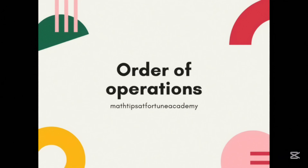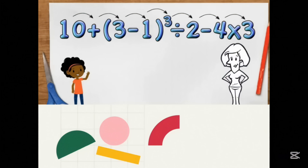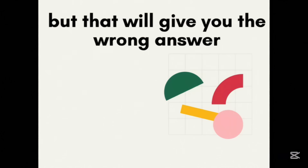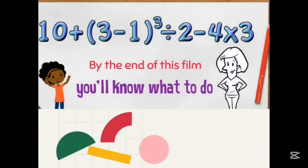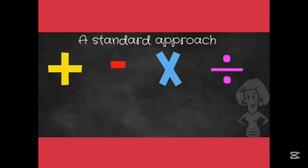Order of Operations at Fortune Academy. What if your teacher gave you this: 10 plus 3 minus 1 in brackets to the power of 3, divided by 2, minus 4 times 3 — would you know where to start? Usually beginners start from the left and keep working to the end, but that will give you the wrong answer. By the end of this video you will know exactly what to do. When we have different mathematical operations in a single problem there should be a standard method we all follow — we call it order of operations.